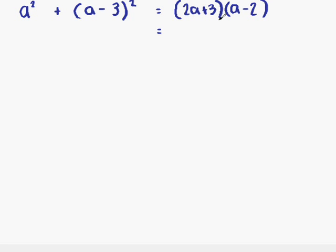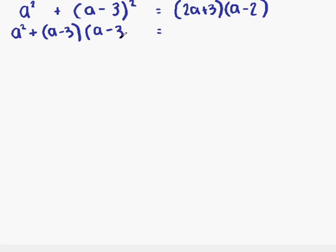We have two brackets sitting beside each other on this side — that means the brackets are multiplying each other. On this side, it's slightly more complicated. We have a minus 3 in brackets, all squared. If you think back to what something squared means, that means you're going to multiply it by itself. So the first thing we have is a squared from the beginning, then we have a minus 3 in brackets multiplying itself: a minus 3 again. The right-hand side we'll leave as it is for the moment.